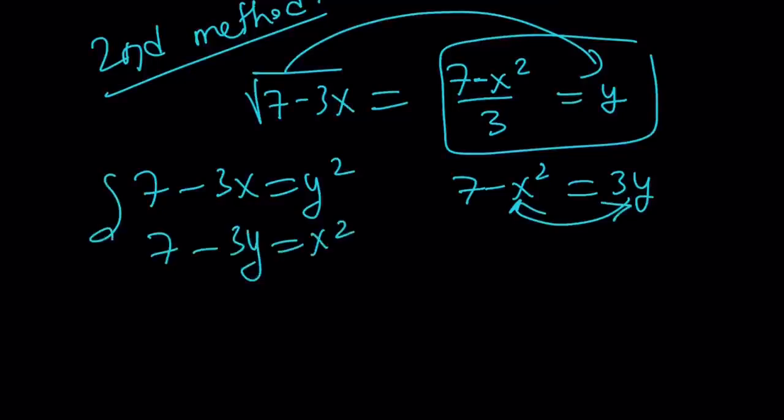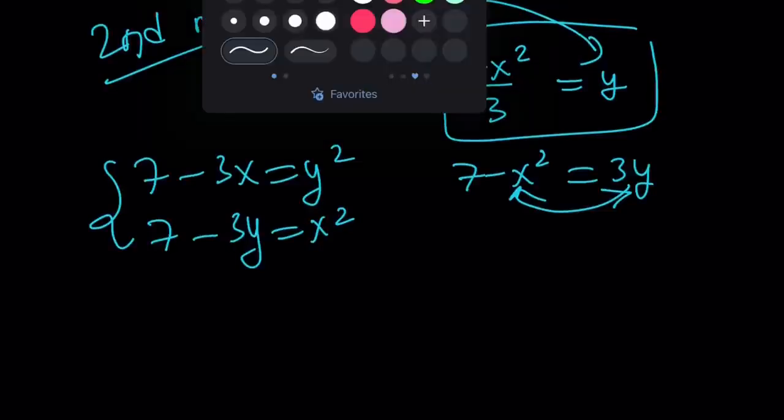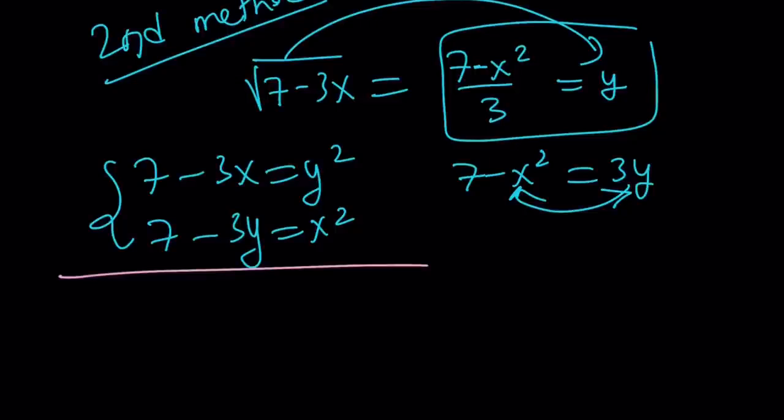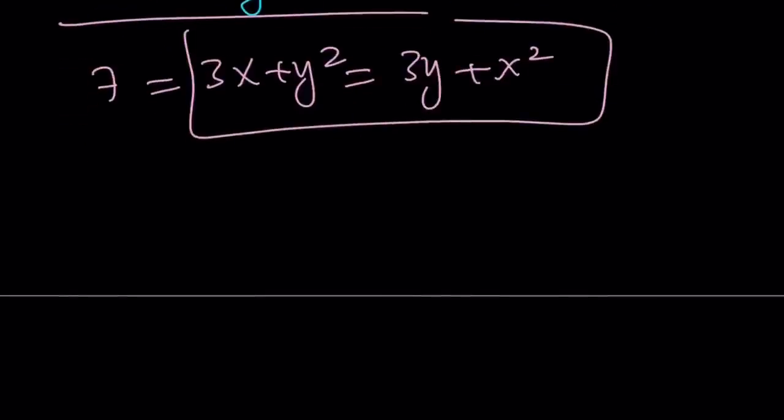And guess what? You've got a lovely, beautiful, awesome system. I know some people don't like these adjectives, but I'm sorry about that. I like them. I hope you don't mind. So we're going to go ahead and do the following. We're going to subtract these two equations. Or, you can do the following. 7 equals 3x plus y squared. But 7 is also equal to 3y plus x squared. So these two things are equal. Awesome. Now, what am I going to do? Put everything on the same side.